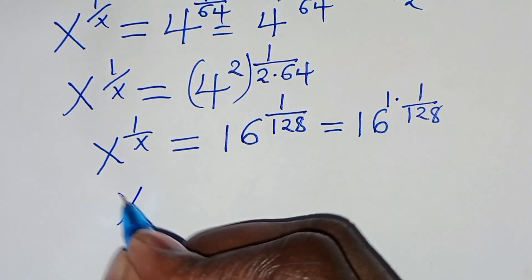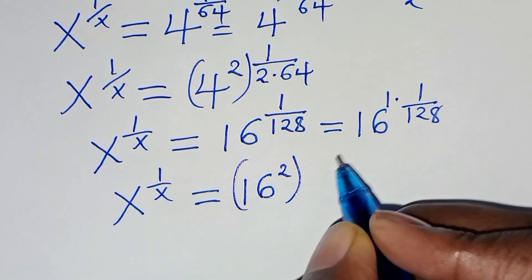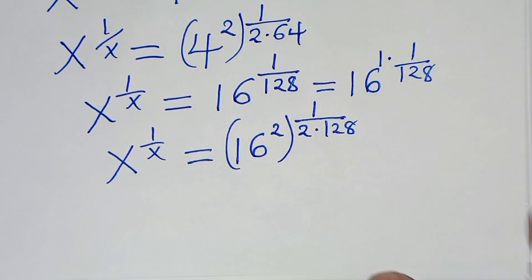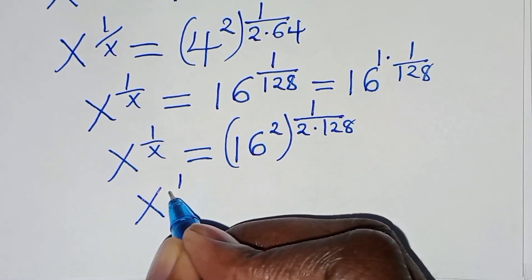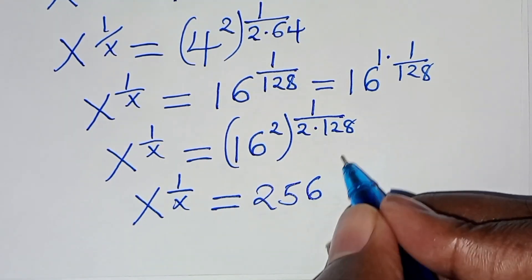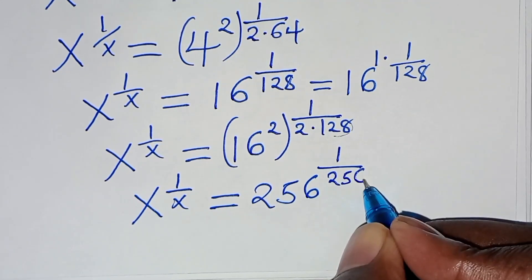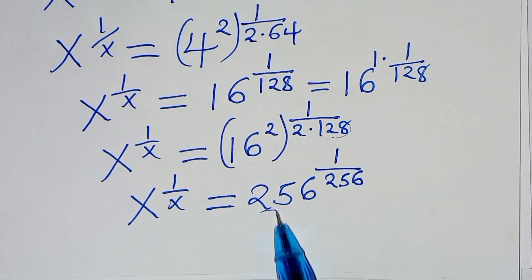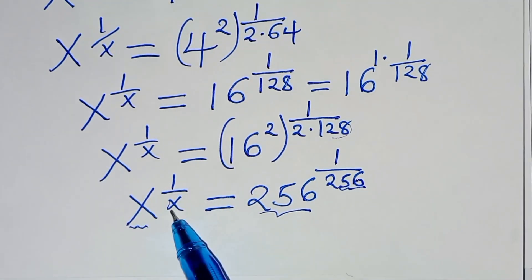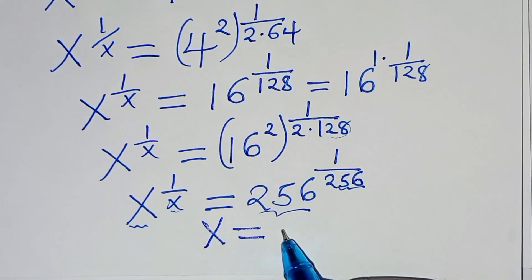Continuing, x to the power 1 over x equals 16 raised to the power 1 over 128. Rewriting again using 2 over 2, we get 16 squared raised to the power 1 over 256, which is 256 raised to the power 1 over 256. Clearly the base and the exponent are now the same, satisfying the required condition, so x equals 256.